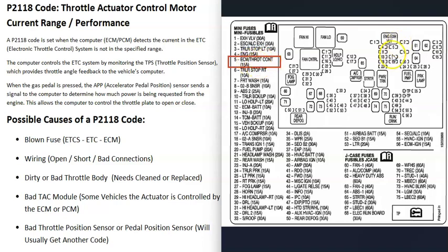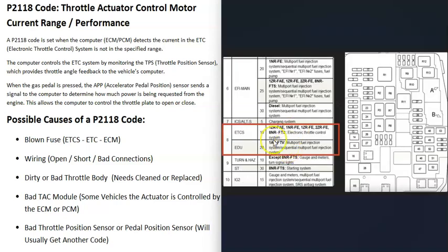Here's another example — a 2015 Toyota Corolla. Toyota commonly labels these fuses ETCS, so in this case it would be the number eight fuse to check. The first thing to check is always a blown fuse.